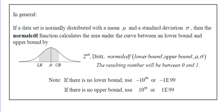In general, if a data set is normally distributed with mean mu and standard deviation sigma, normal CDF calculates the area under the curve between a lower bound and upper bound: second function, distribution, normal CDF, lower bound, upper bound, mu, sigma. If there's no lower bound, use negative 1E99; if there's no upper bound, use 1E99. The result is always between 0 and 1.